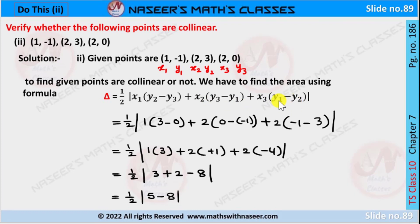Now we substitute x and y values, then we can write it as ½|1(3-0) + 2(0-(-1)) + 2(-1-3)|. 3 minus 0 is 3, minus into minus is plus, so 0 plus 1.